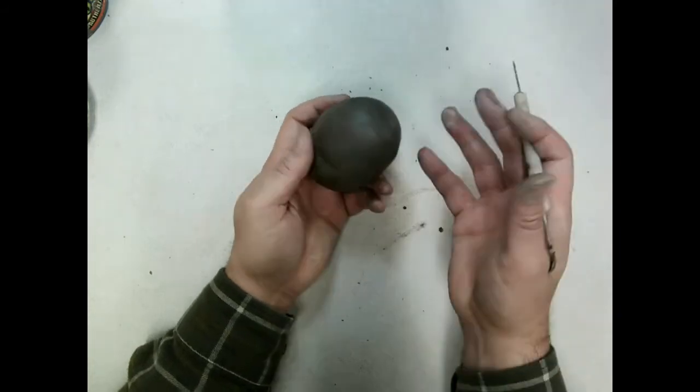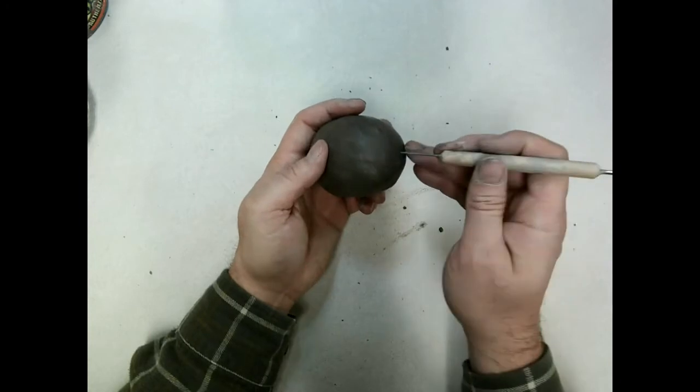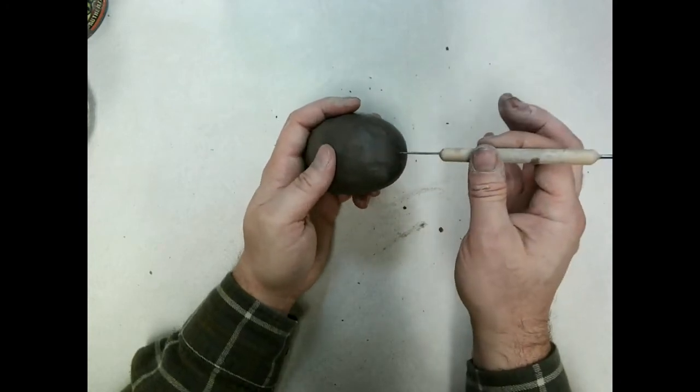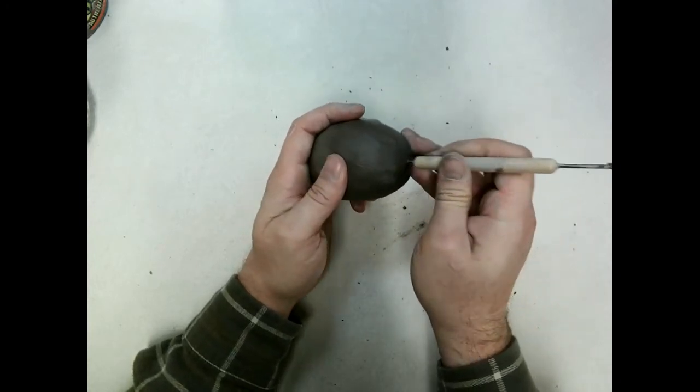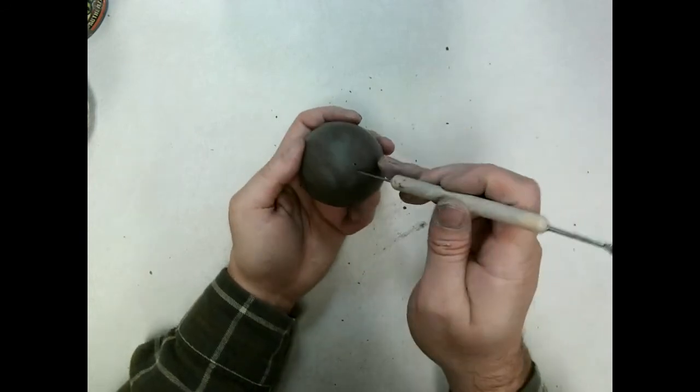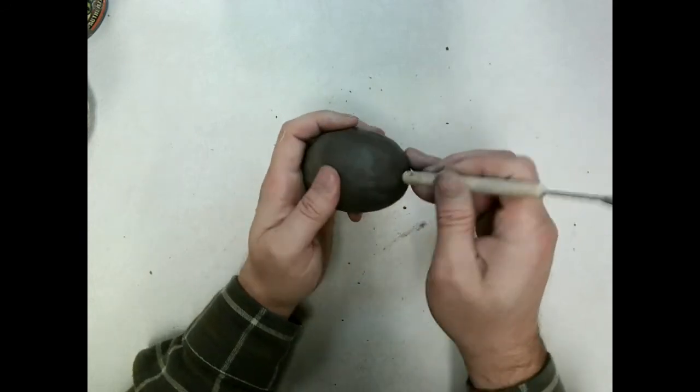Otherwise, your clay rattle will blow up in the kiln. So some place on there you need to take, and it can be as small as a needle tool like this, and you can create a hole for the gas to escape.